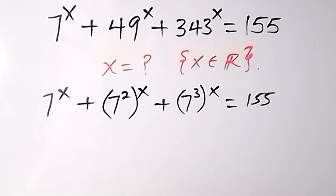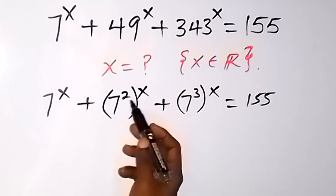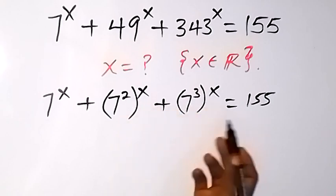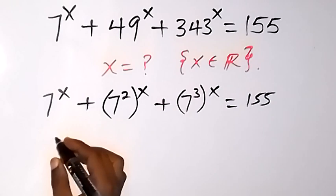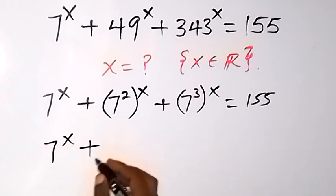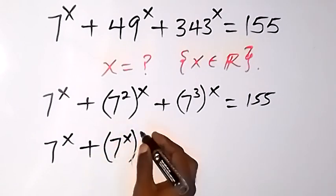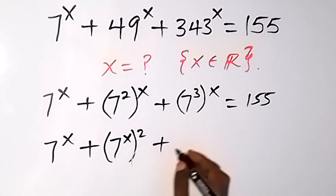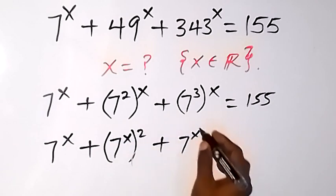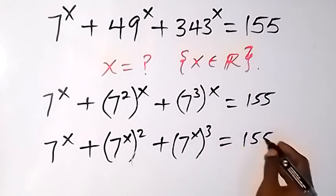From the law of indices, we can bring x in and take 2 out and interchange each part. So we now have 7 raised to power x, plus 7 raised to power x raised to power 2, plus 7 raised to power x raised to power 3, equals 155.